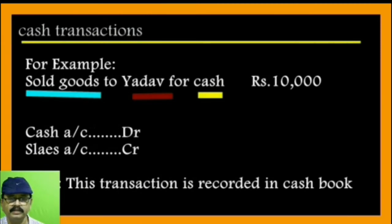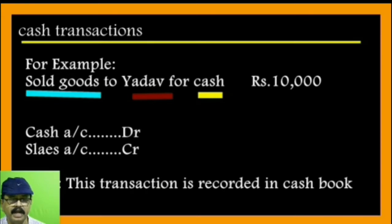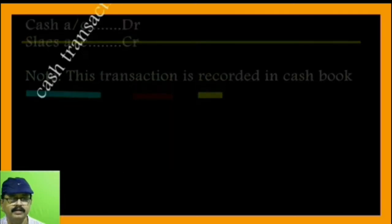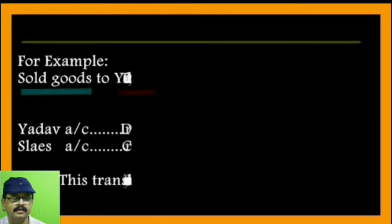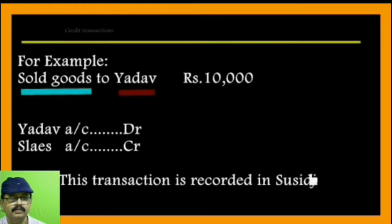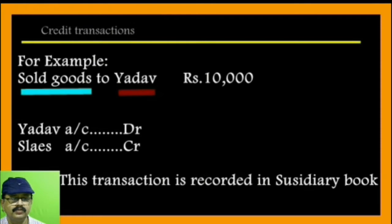Let me explain on the board. For example, sold goods to Yadau for cash 10,000. First we should identify the accounts — sold goods means goods account, Yadau account, and cash account. The main thing here is cash is coming in and goods are going out, so cash account is debit and sales account is credit.